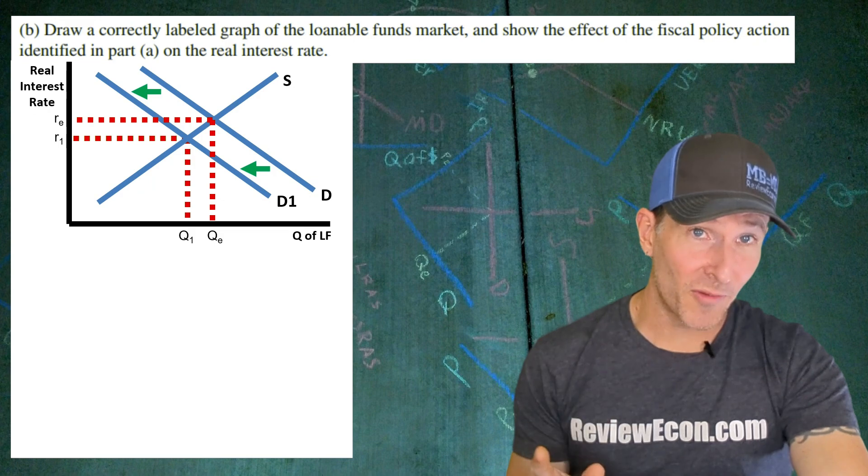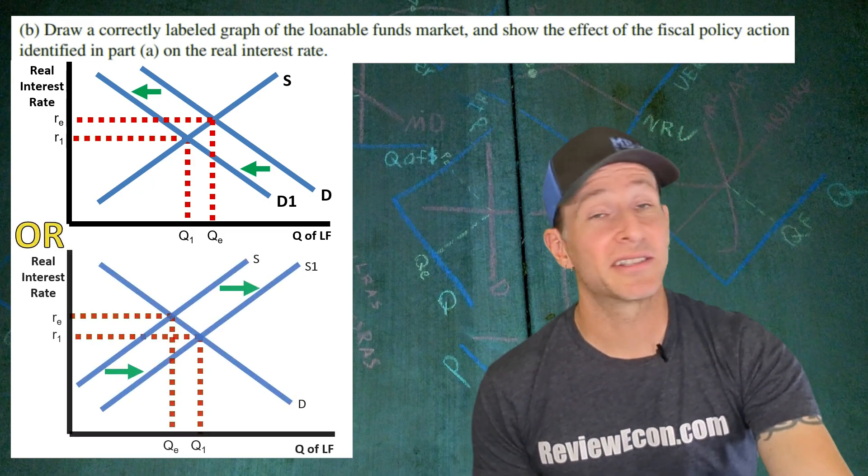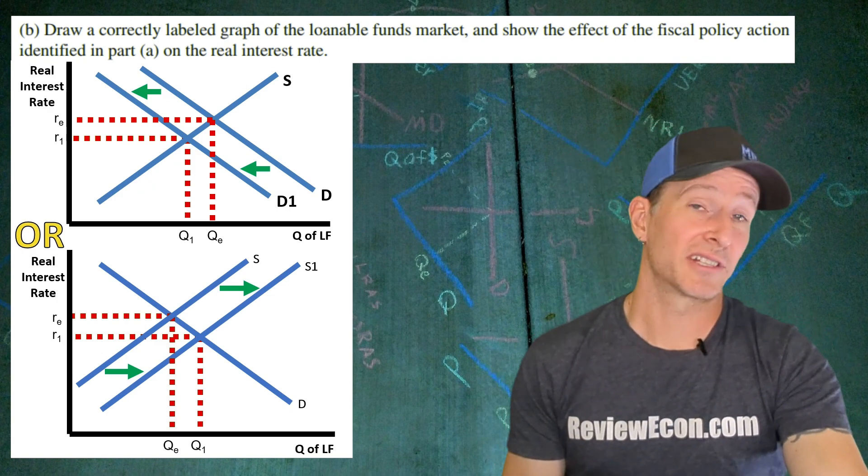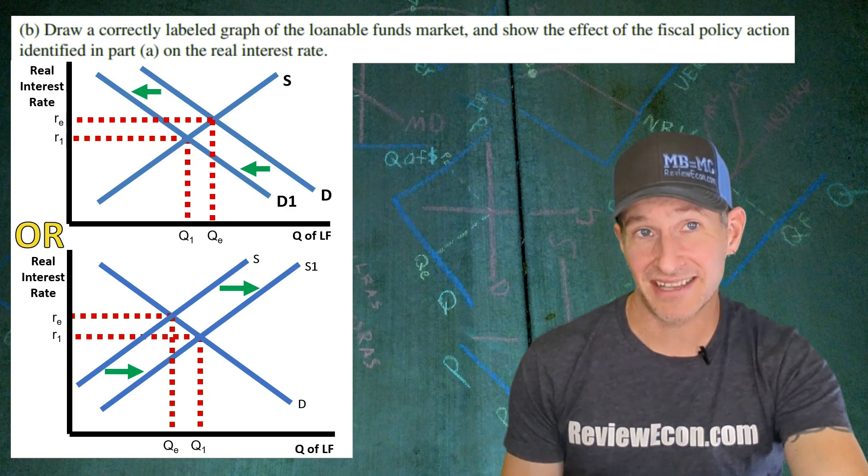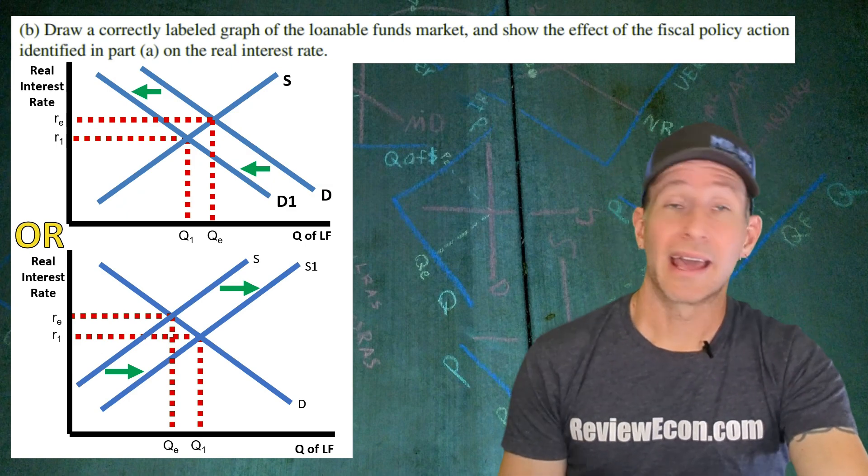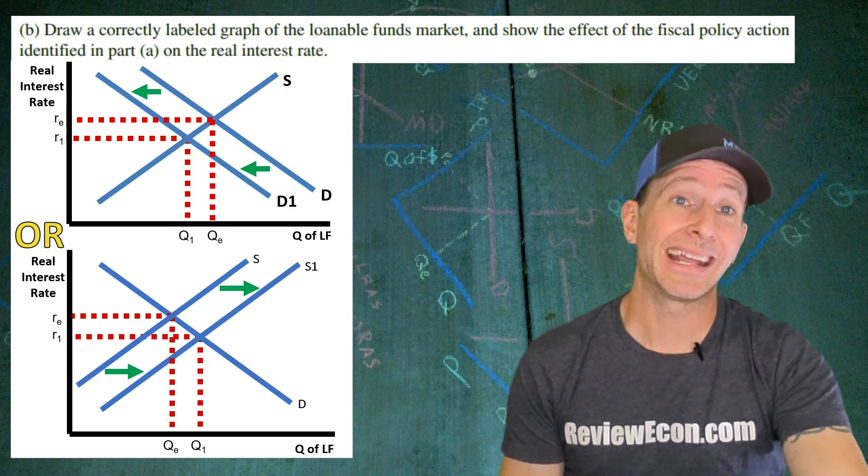As you may already know, there's another way to draw the impact of this fiscal policy action, and that would be to increase the supply of loanable funds. In this analysis, the government is actually borrowing less, so there's more supply of loanable funds in the private sector. Either of these shifts is acceptable. You'll get one point for the graph and a second point for the appropriate shift, with the impact on the real interest rate being a decrease.